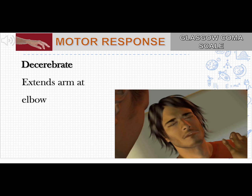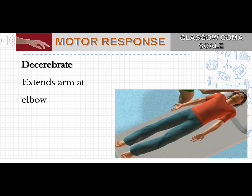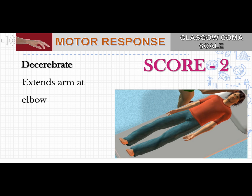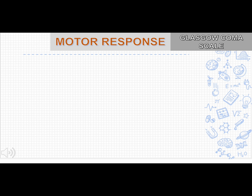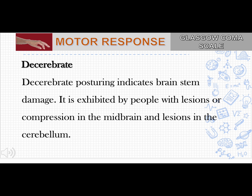Next motor response is decerebrate posture, which is abnormal extension. In response to painful stimuli, there will be extension of the wrist, or the patient may exhibit straightening of the arm or leg — give a score of 2. Decerebrate posture indicates damage to the brain stem, or compression in the midbrain or cerebellum.